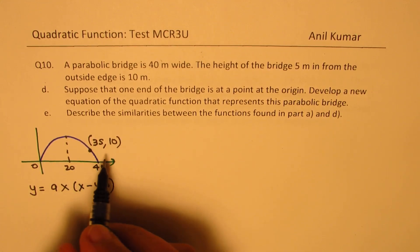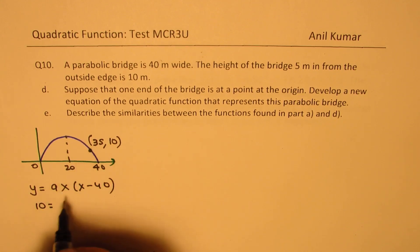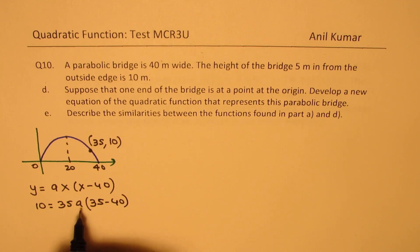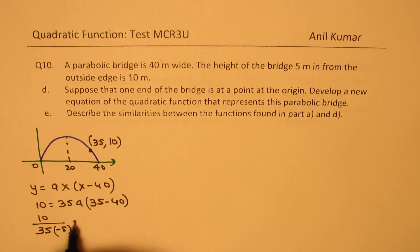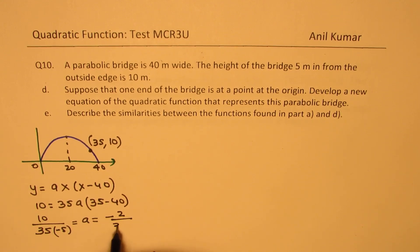Since we are given this point, we'll substitute 10 for y and 35 for x. We get 35x, I mean a, and we have 35 minus 40. So that gives you the value of a as 10 divided by 35 times this, which is minus 5. So the value of a is exactly the same as we got last time, as minus 2 over 35, correct?